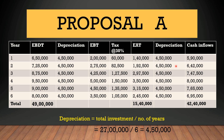Depreciation is not going outside your organization. We deducted depreciation first only to calculate EBT so we could deduct tax correctly. Then we got EAT. Since depreciation is a non-cash item, it has to be added back. We want cash inflows for capital budgeting, not net profit. That is why depreciation is added back to Earnings After Tax.